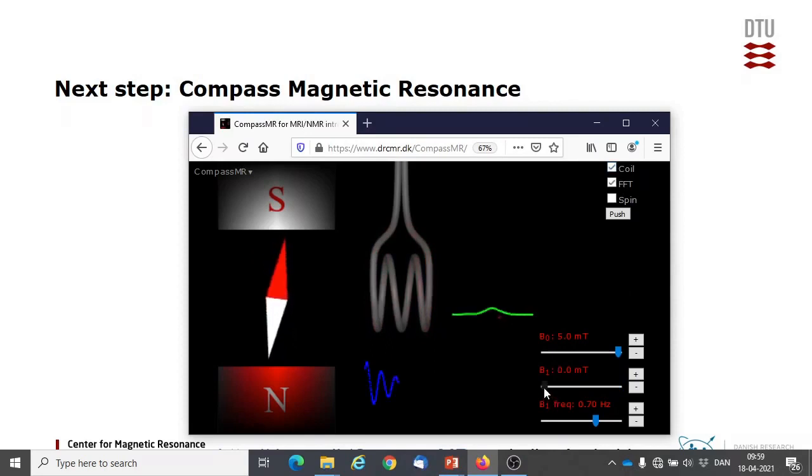Nuclei do not behave exactly as compass needles, since they have angular momentum spin. But they can still be excited with an oscillating magnetic field matched to the resonance frequency, the Larmor frequency. Unlike compass needles, the nuclear resonance frequency is independent of oscillation amplitude, hence the nuclei can be excited more than 90 degrees.